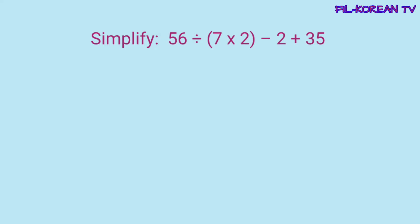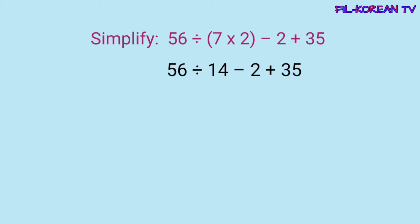Next problem: let's simplify 56 divided by open parenthesis 7 times 2 close parenthesis minus 2 plus 35. I-solve natin ito. Unahin natin i-solve yung nasa loob ng parenthesis: 7 times 2 equals 14. Sunod, mag-divide tayo: 56 divided by 14 equals 4.